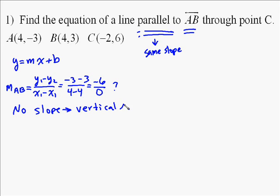What you need to remember is that no slope implies that the line is a vertical line, straight up and down. So our new point is, our new line is also going to be a vertical line.